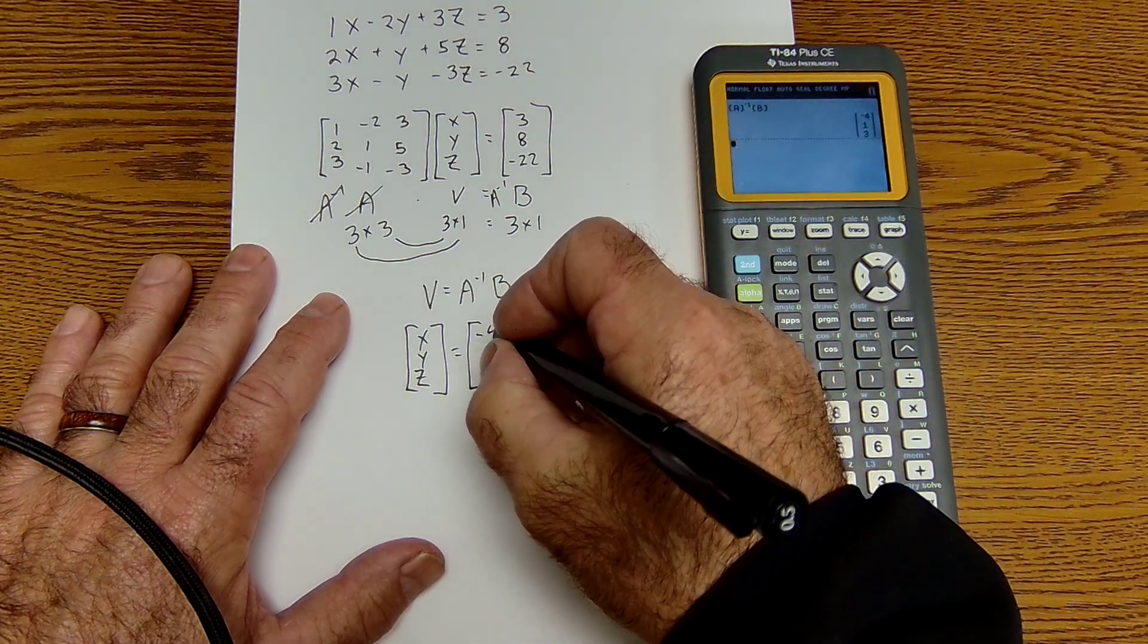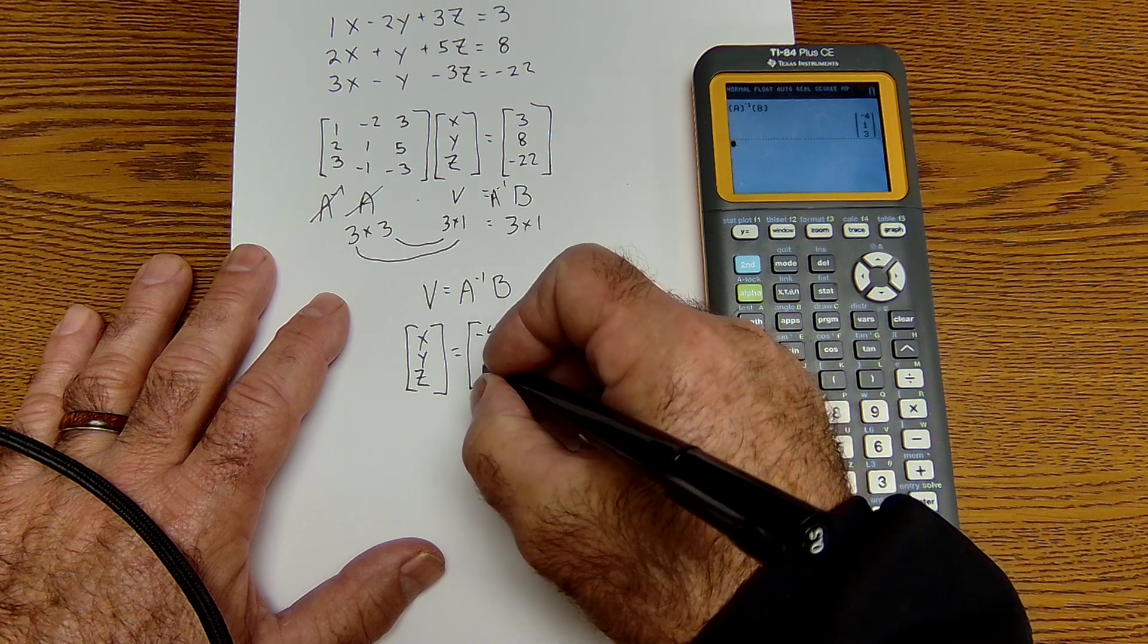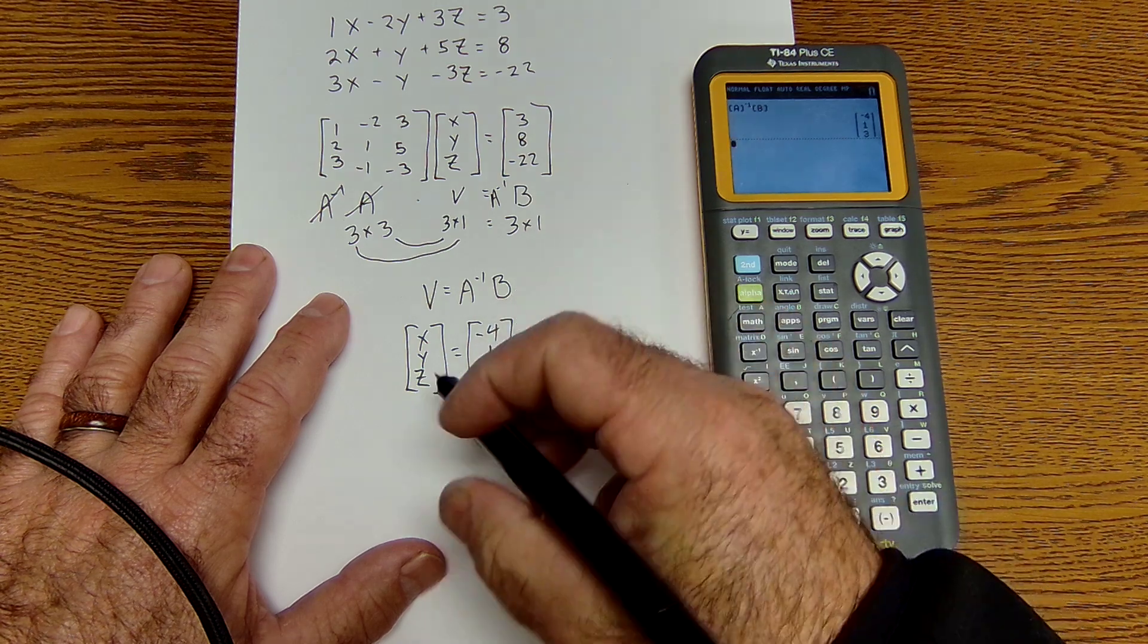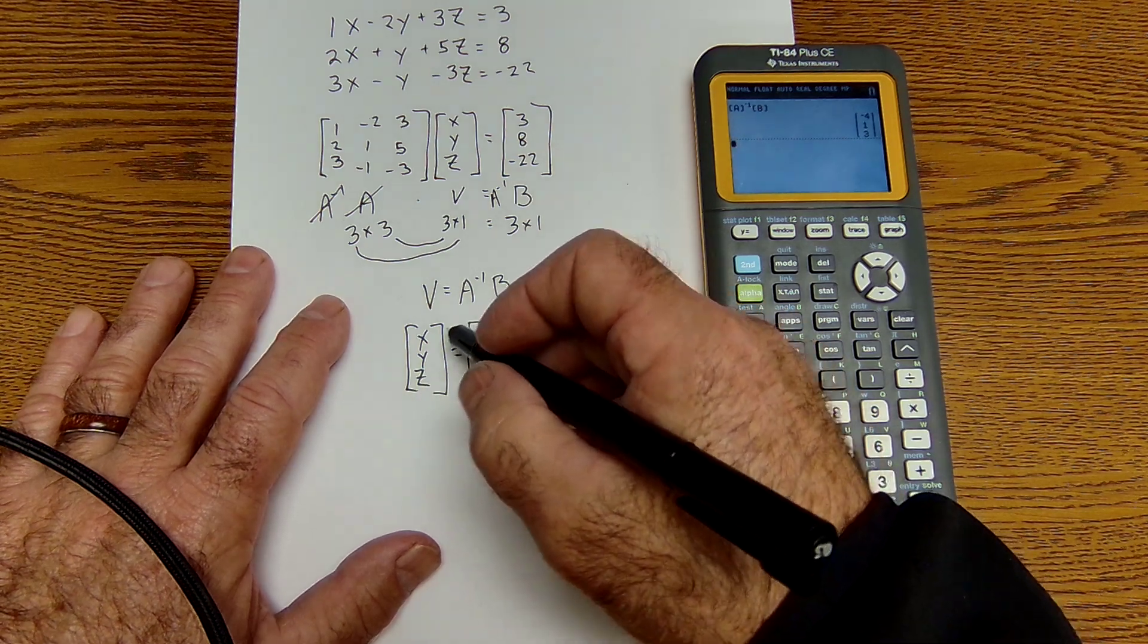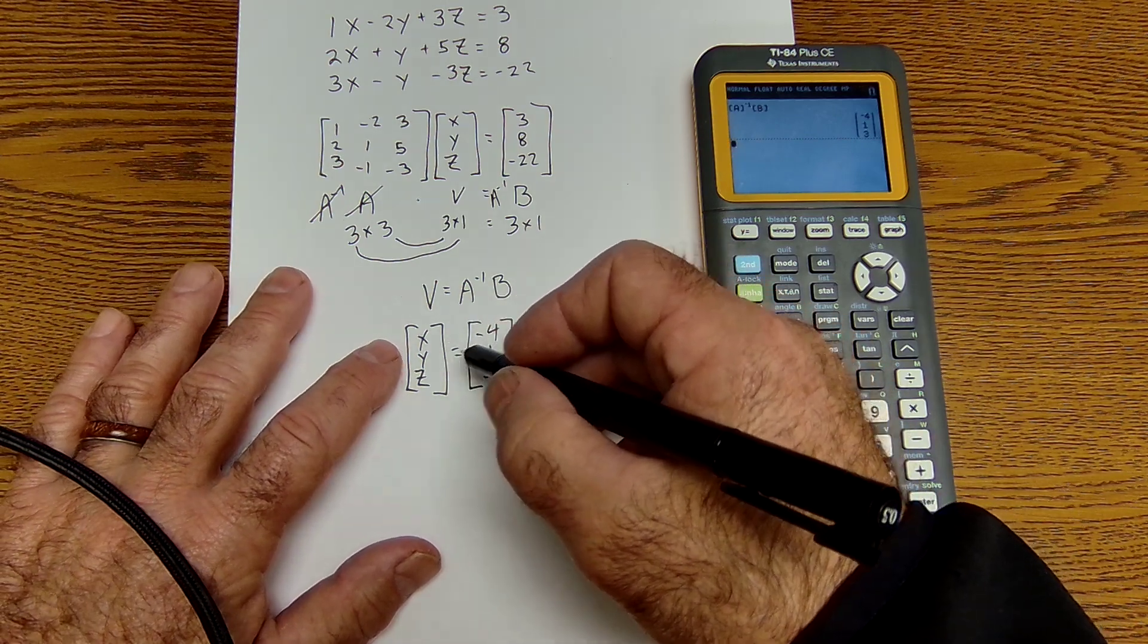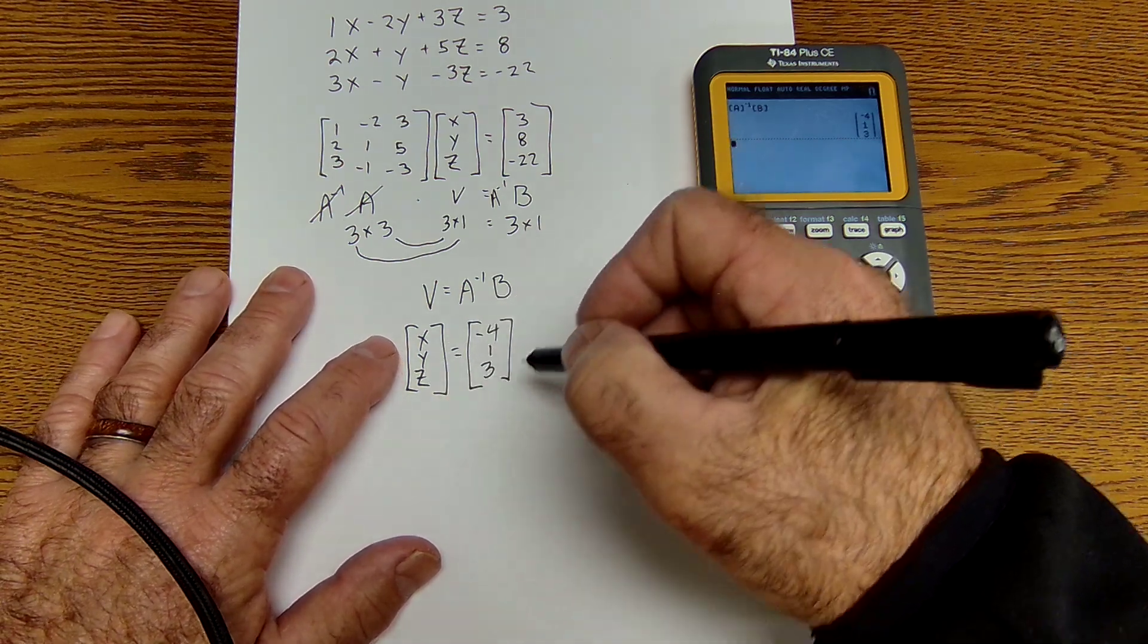So x is negative 4, y is 1, z is 3. This matrix equals this matrix. x must equal negative 4, y is 1, z is 3. Just to double check, I could plug those values in.